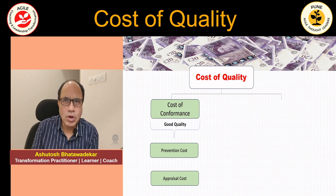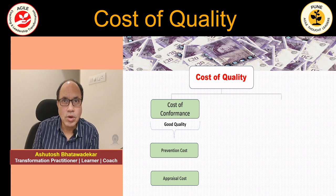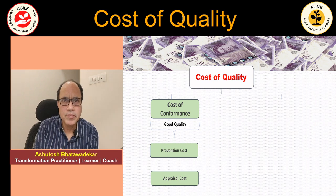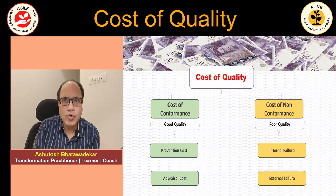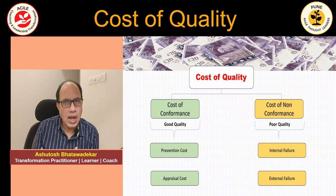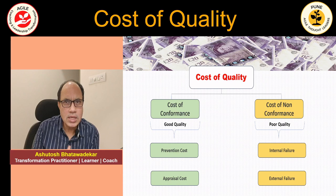One is cost of good quality — something which we incur that results in a good quality deliverable. This is called the cost of conformance, and it has two parts: prevention cost and appraisal cost. Then we have cost of poor quality, which is called cost of non-conformance, and it has an internal failure cost and an external failure cost. Let us understand these with an example using an ice cream manufacturing unit.